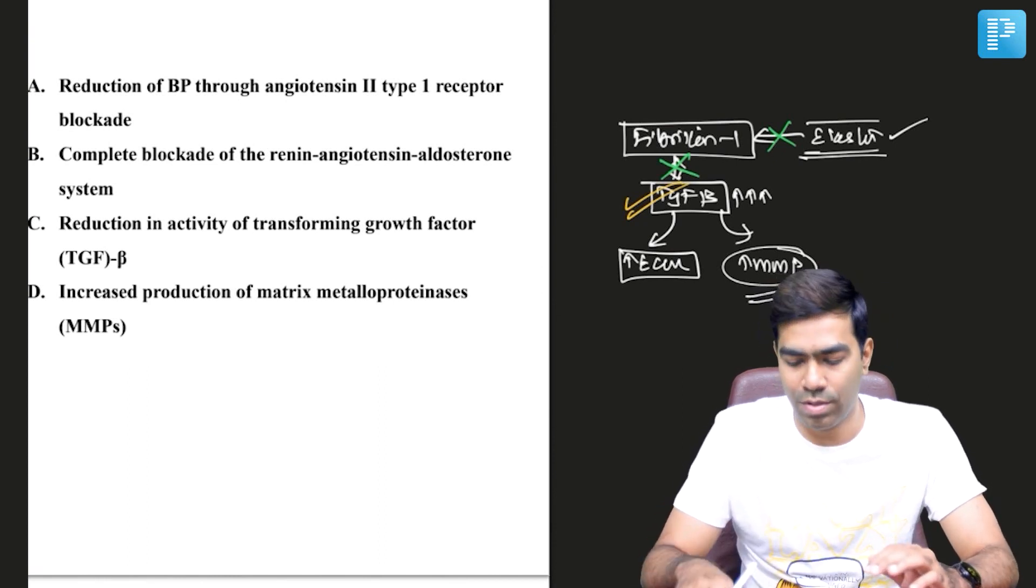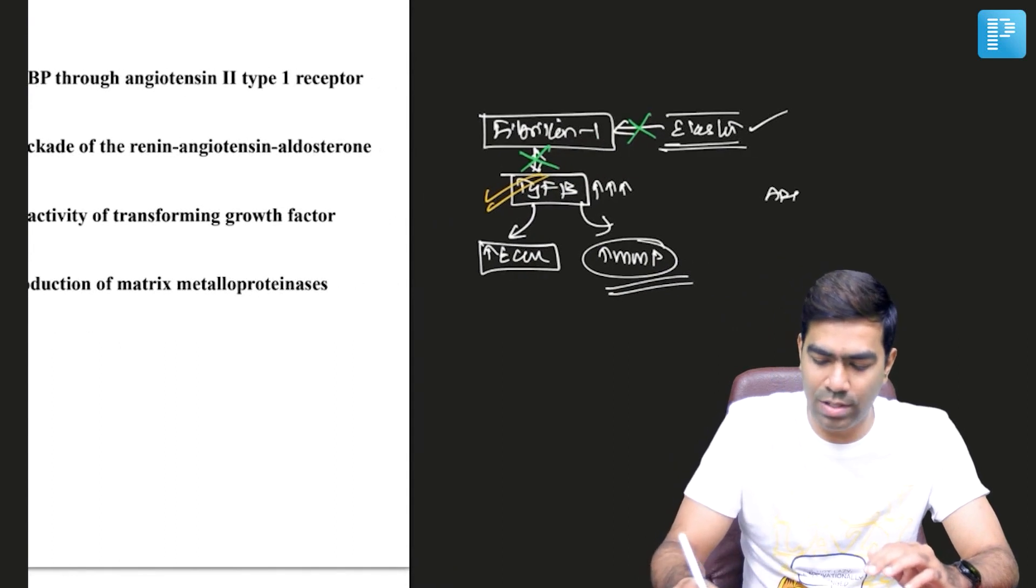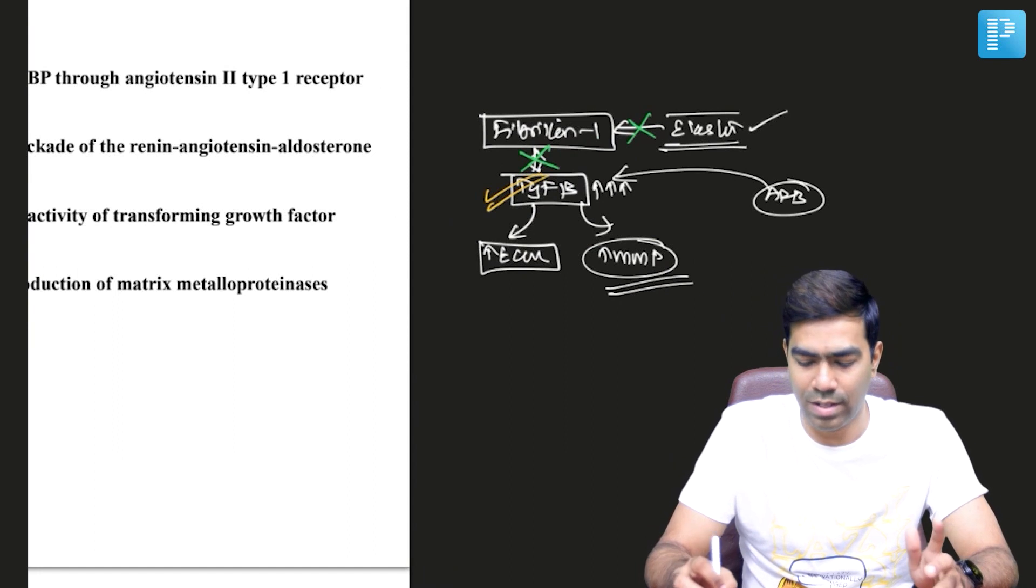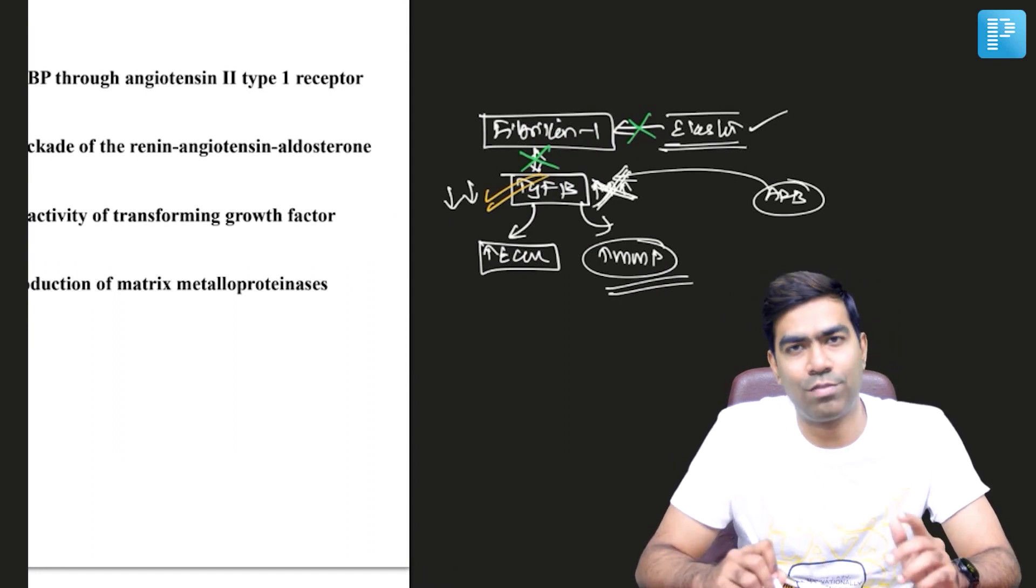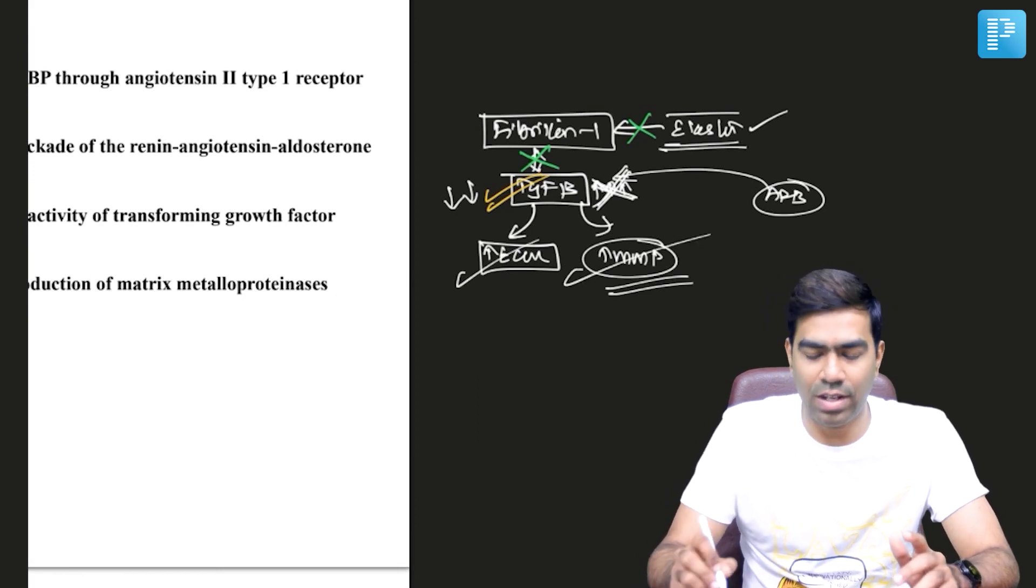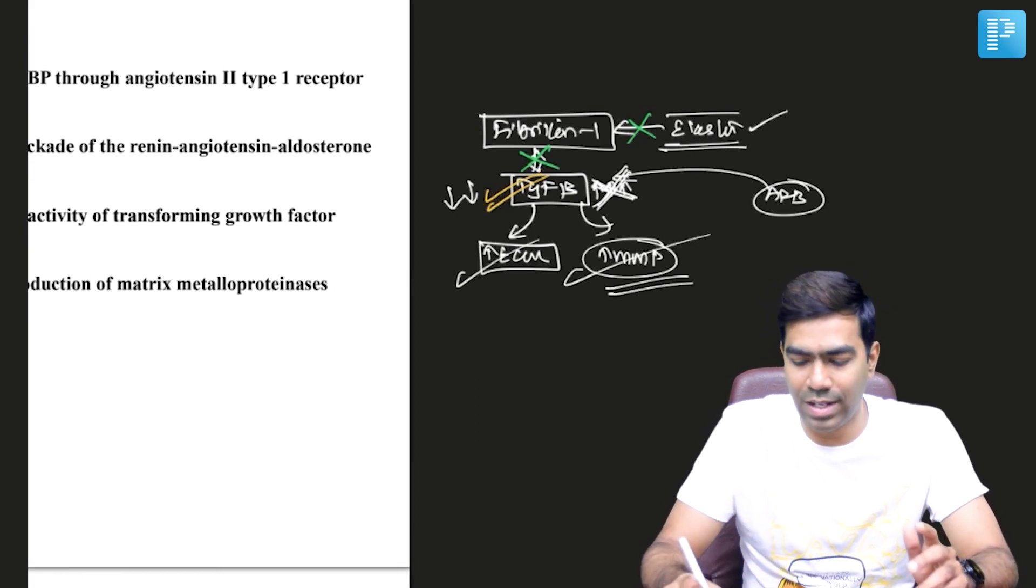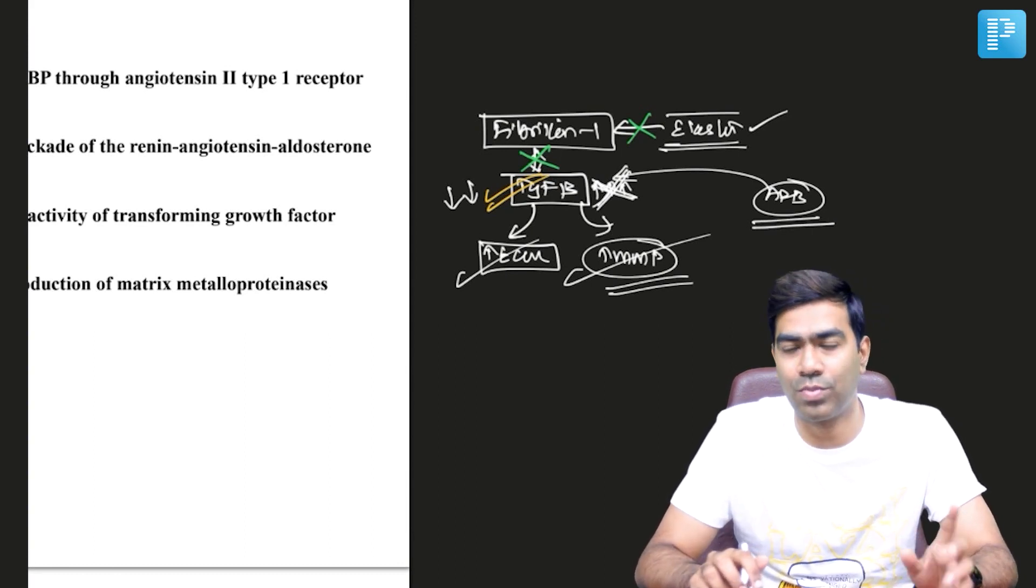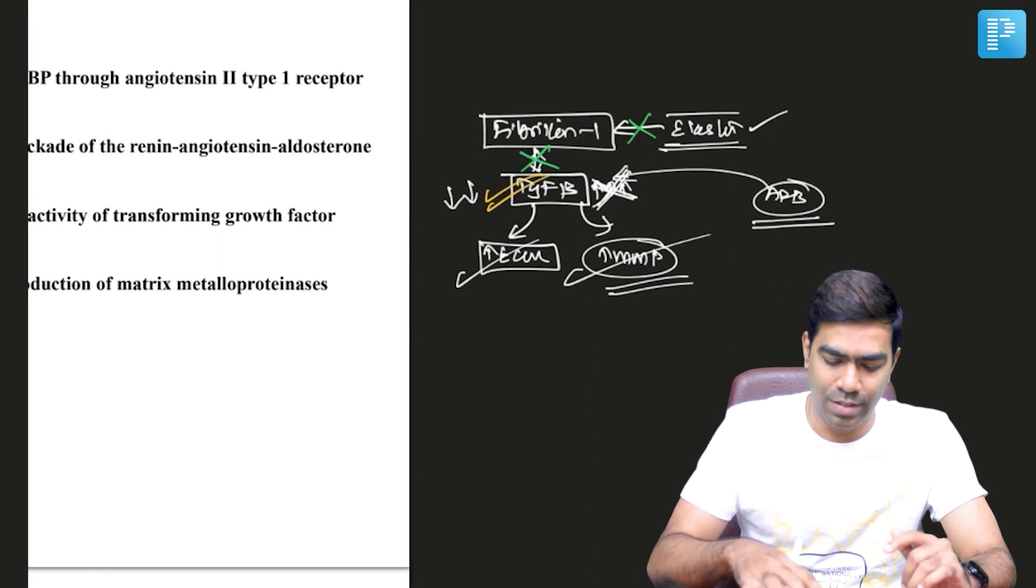It's believed that angiotensin receptor blockers, by acting on angiotensin II type 1 receptors, can downregulate the production of TGF-beta. That's why ARBs have a beneficial effect in Marfan syndrome. Remember, it's ARBs and not ACE inhibitors that are beneficial.